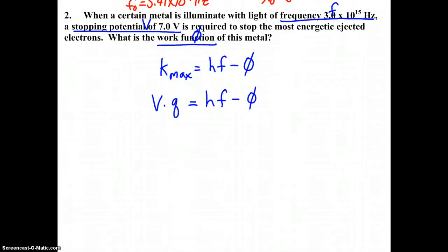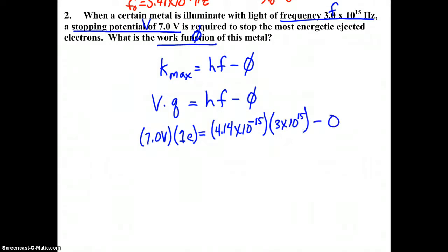The easiest way to proceed is to take the electron volt second route. With a stopping potential of 7 volts and q as one elementary charge, we get 7 eV for maximum kinetic energy. Using 4.14 times 10 to the negative 15 for Planck's constant times the frequency 3 times 10 to the 15, solving for phi, we get 5.42 electron volts.